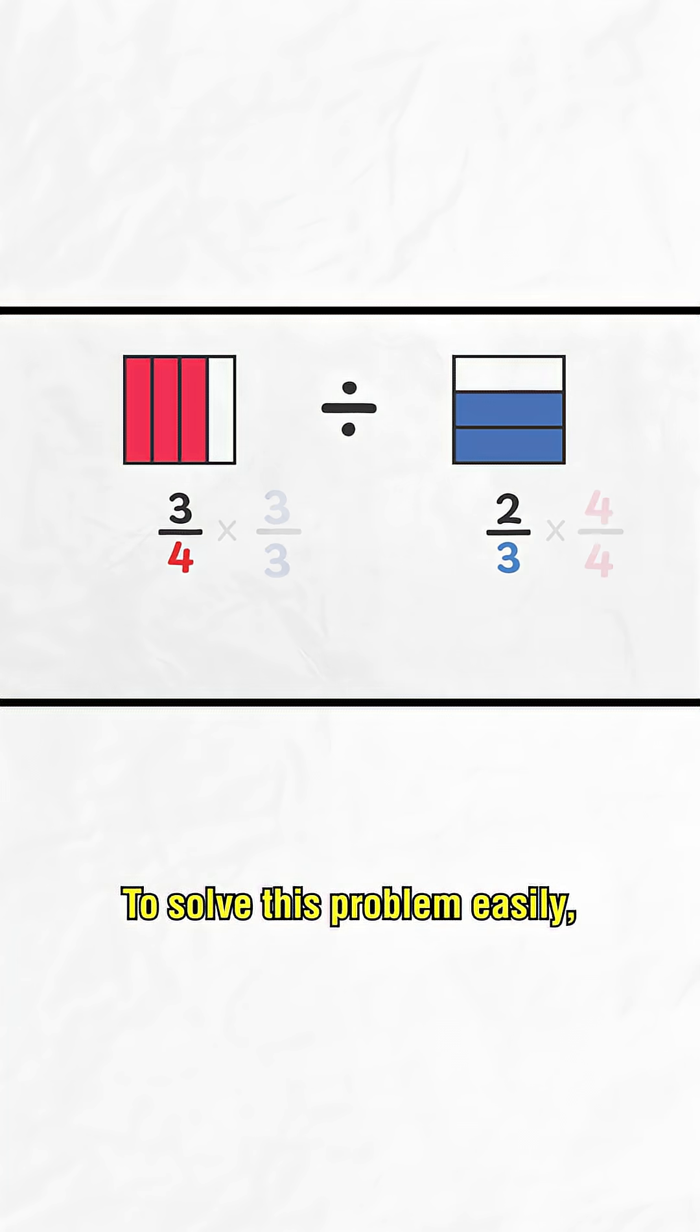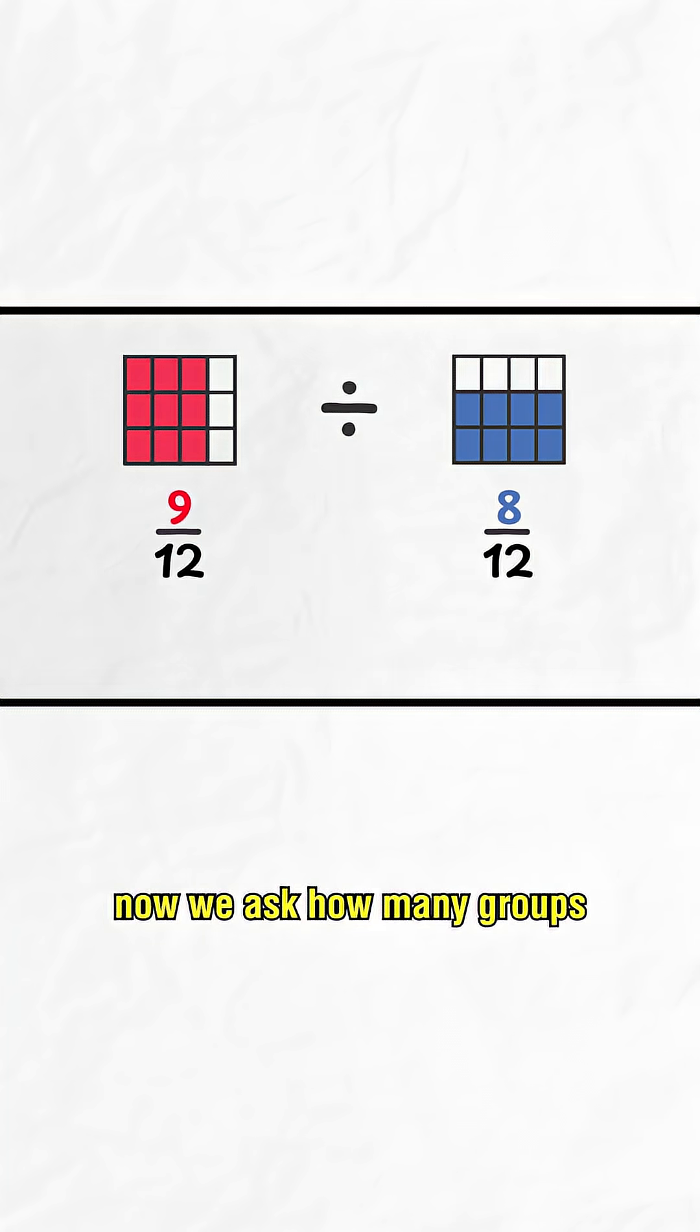To solve this problem easily, we'll need to find a common unit. After dividing it up evenly, now we ask, how many groups of 2 thirds, which is equal to 8 twelfths, fit into 3 fourths, which is the same as 9 twelfths.